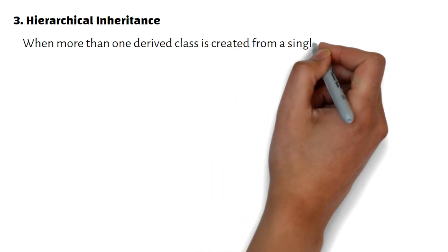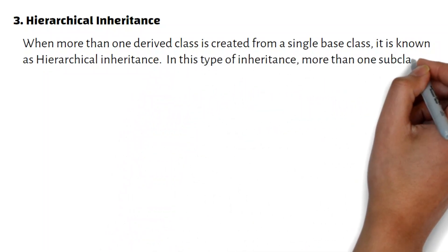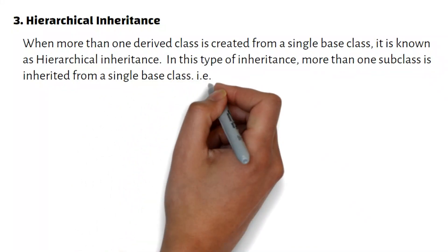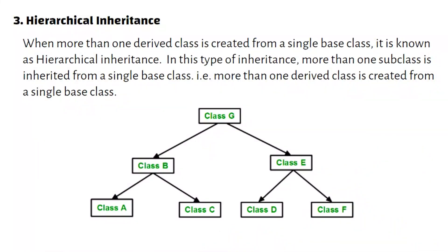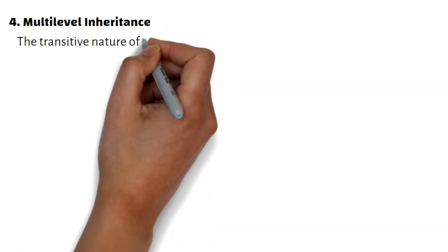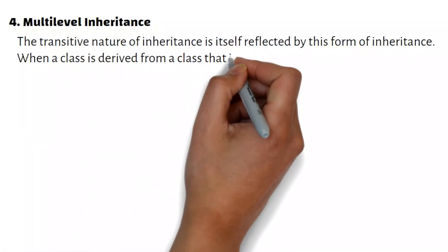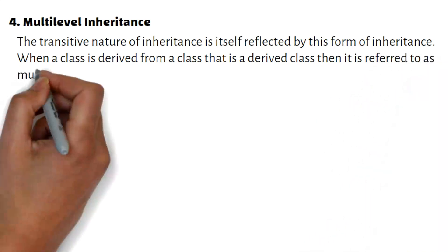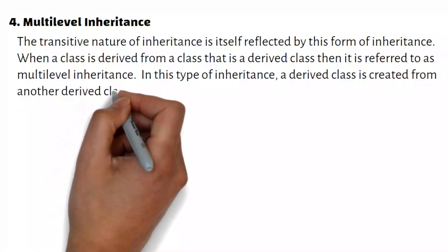Hierarchical inheritance: when more than one subclass is inherited from a single base class, it is known as hierarchical inheritance. Multilevel inheritance: a derived class is created from another derived class, i.e., more than one derived class is created in a chain from a single base class.